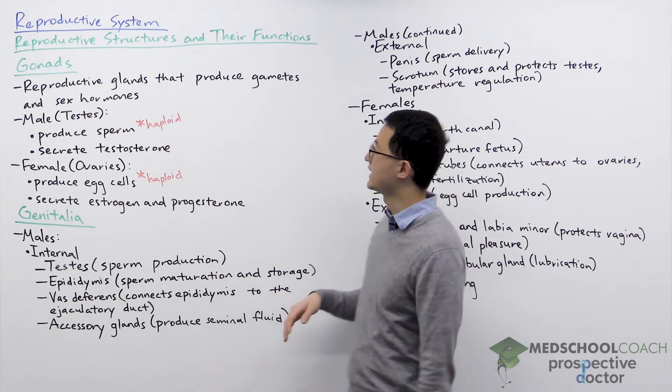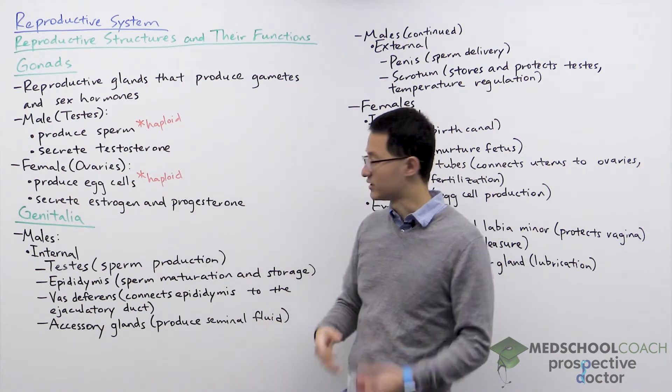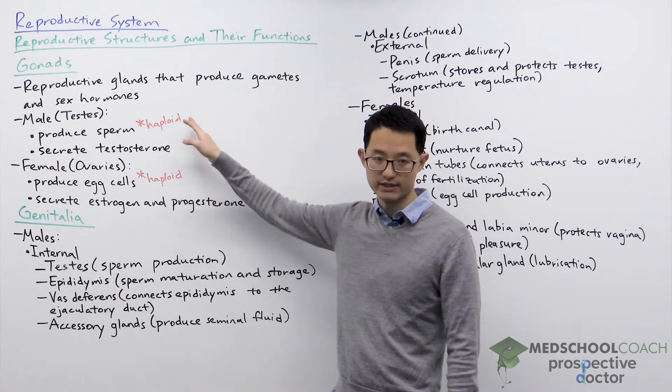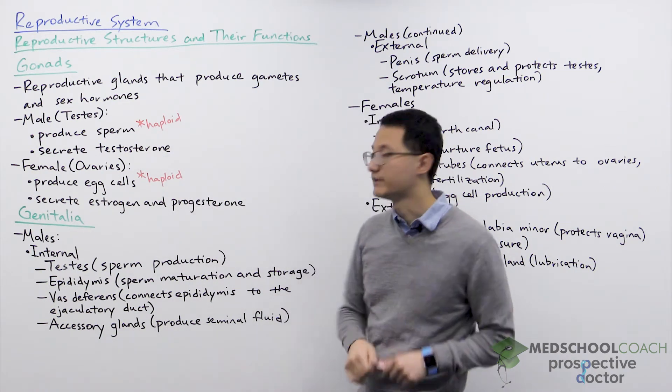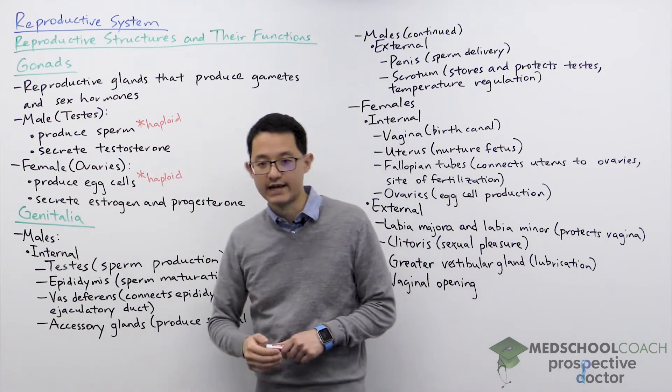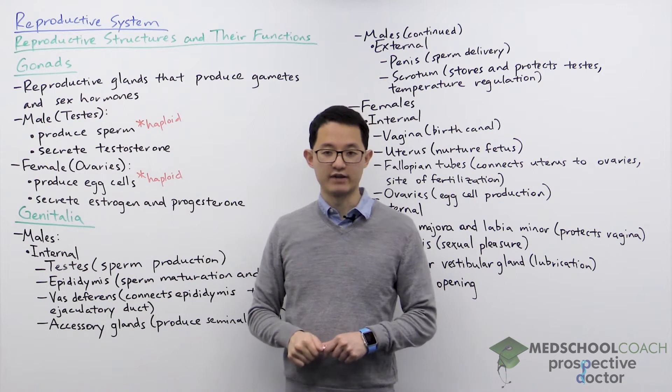Notably the gametes, which are the sex cells for producing new organisms, are both haploid sperm and egg cells. In females the gonads are called the ovaries. They produce egg cells and they also secrete estrogen and progesterone.